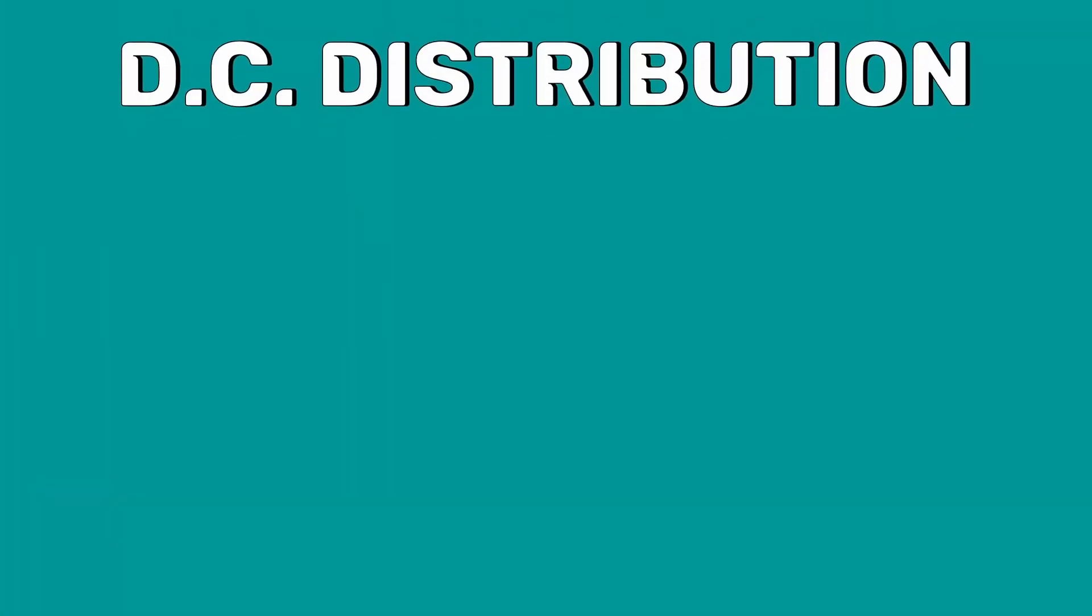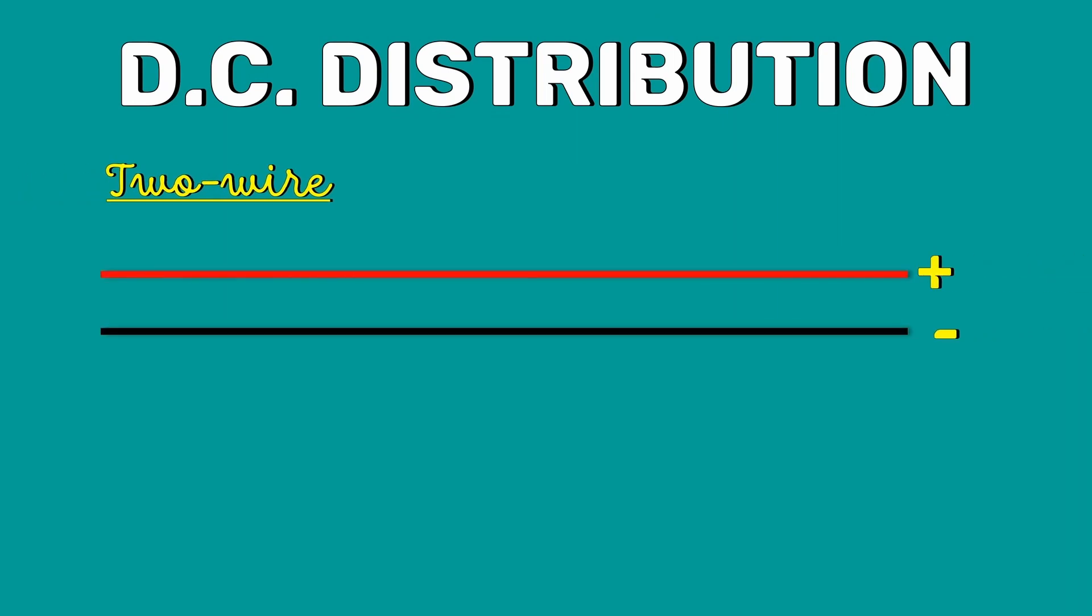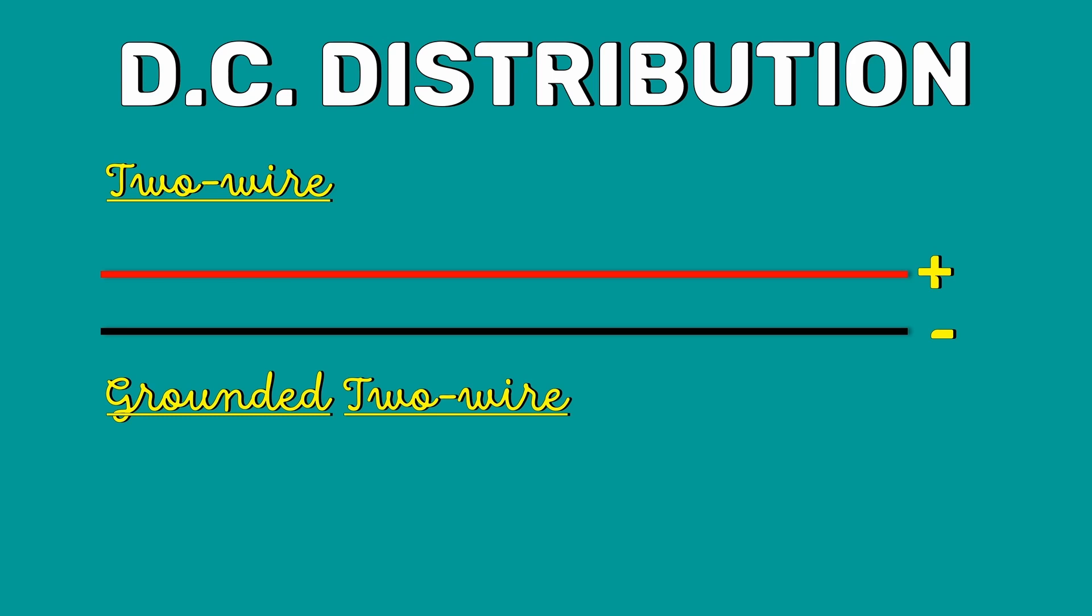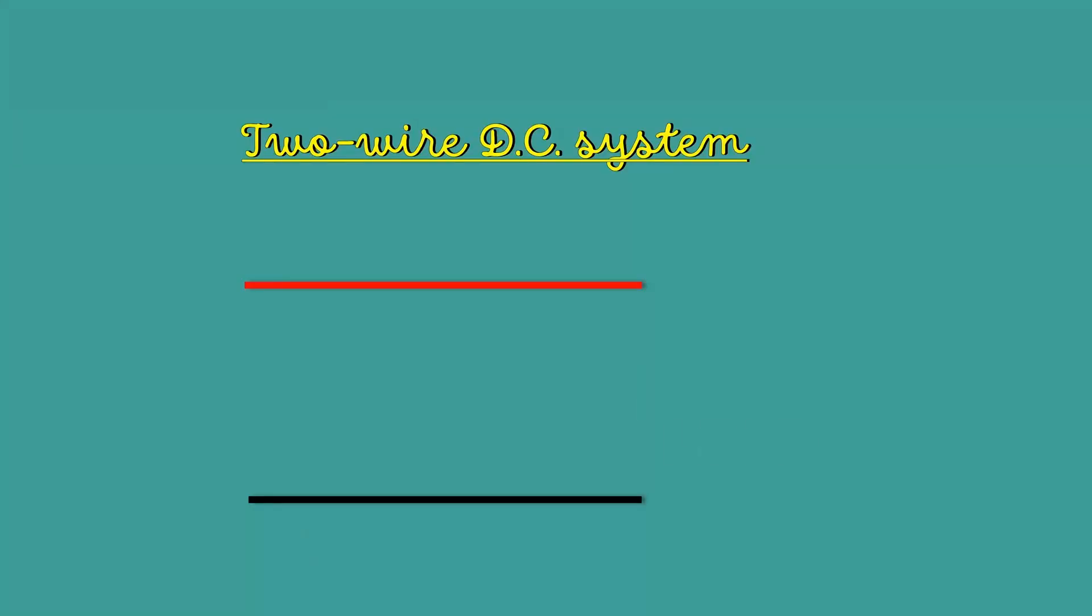Generally, the DC system has two wires, the positive one and the negative one. In the grounded DC two-wire system, one of the wires is grounded. The main disadvantage of the two-wire DC system is that only one voltage is available in the consumer's terminal. This problem can be solved by using three-wire DC system.